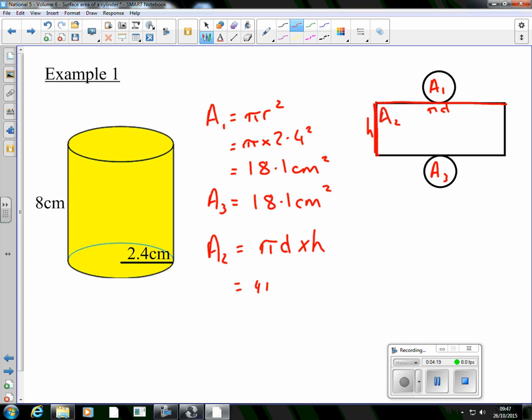So pi d multiplied by the height. So the diameter is pi times, oh it's not 2.4, that would be a daft mistake. Pi times 4.8 and then the height of the cylinder is just 8. Pi times 4.8 multiplied by 8.